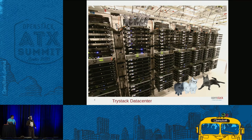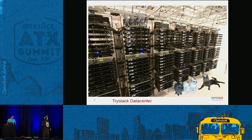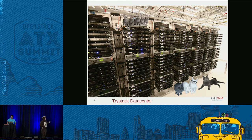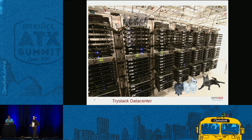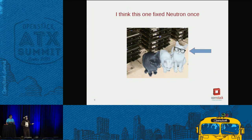Here's the current TryStack data center — there is absolutely nothing out of the ordinary with this picture. These are the data center cats. They've been there as long as I've been involved with the environment, and I think they're multiplying because more keep showing up. But they're benevolent — they just kind of hang out. I think this one fixed Neutron once.